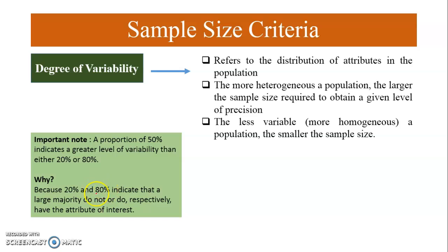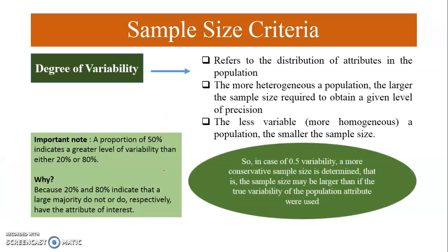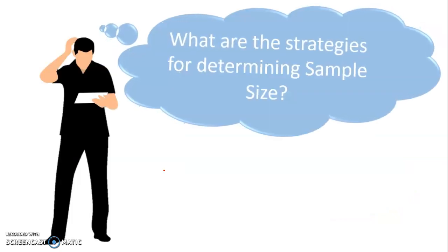In both the 20% and 80% cases, the majority is 80%. But in the case of a 50% proportion, half of the sample items follow the recommended practice and half do not, giving the greatest amount of variability. Therefore, with a variability of 0.5, a more conservative — larger — sample size is determined. Researchers usually use 0.5 variability because it is the maximum, ensuring the sample size will always be higher than if the actual population variability were used.